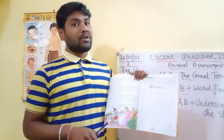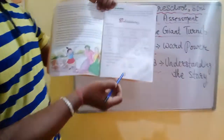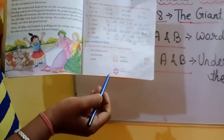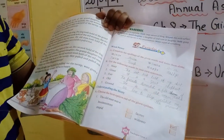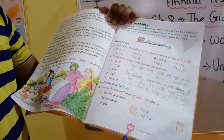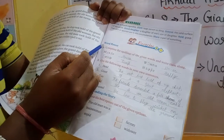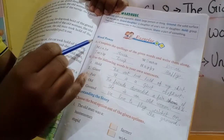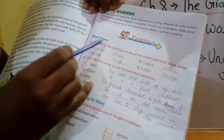Children, make your books ready. Page number 57. Okay, word power. सबसे पहले हम लोग word power करेंगे.